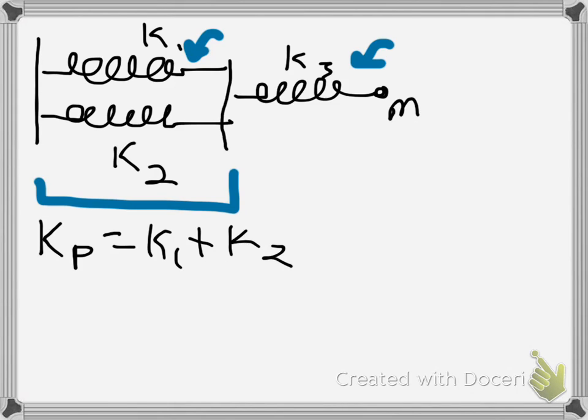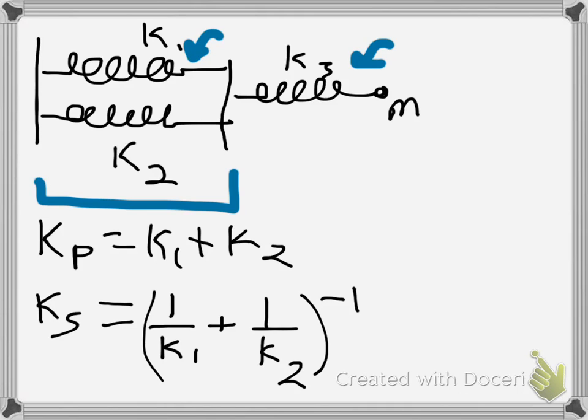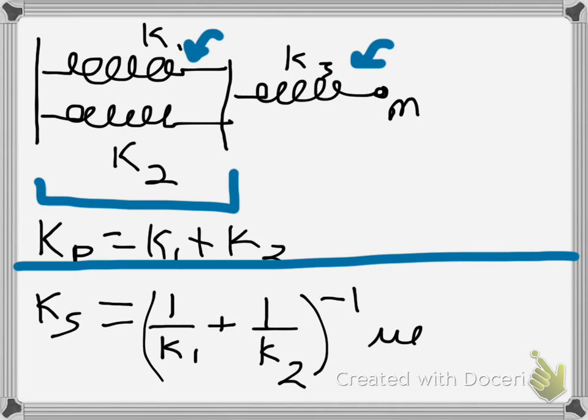And then k series, I'm just going to make up some variables here. So if I have two springs in series, that would be k1 inverse, k2 inverse, and then you would have to take the inverse of that whole thing. So just to be clear, what I've written down here is for if we had k1 attached to k2 like this.